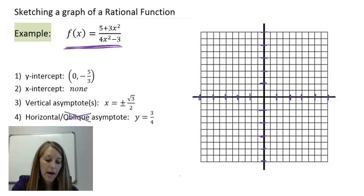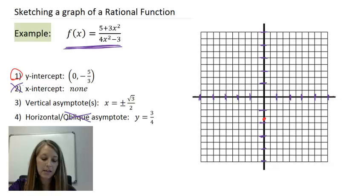Okay, my y-intercept, let me graph that in red, that's at negative five-thirds. And if you ever need to come up with the decimal approximation to graph these, that's perfectly fine. I encourage you to do so. If I just change this to a mixed fraction, that actually gives me one and two-thirds. So I'm going to go down one and two-thirds. That gives me my y-intercept. My x-intercepts, I did not have any, so I will not plot any in this case.